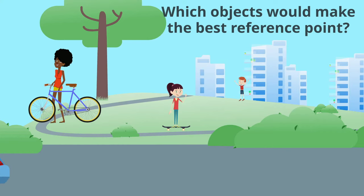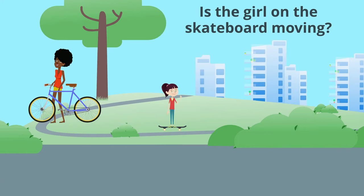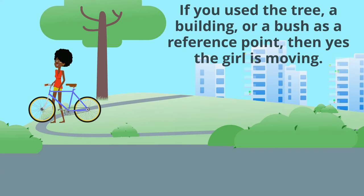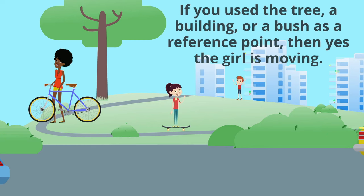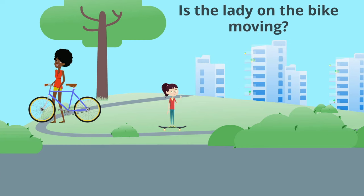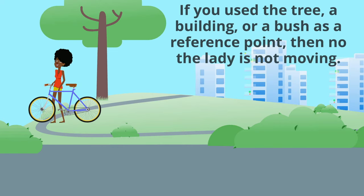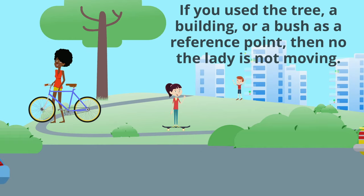Which objects would make the best reference point? Is the girl on the skateboard moving? If you used the tree, a building, or a bush as a reference point, then yes, the girl is moving. If you used the tree, a building, or a bush as a reference point, then no, the lady is not moving.